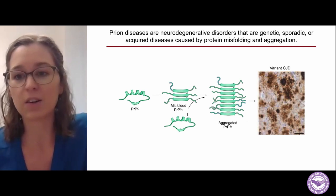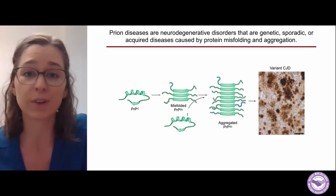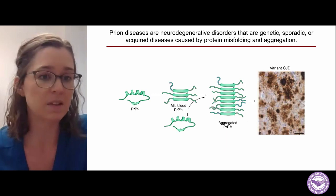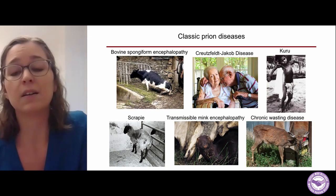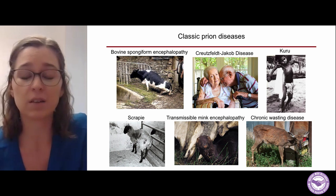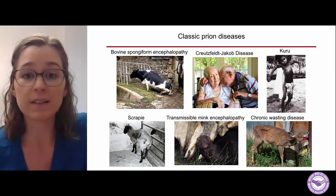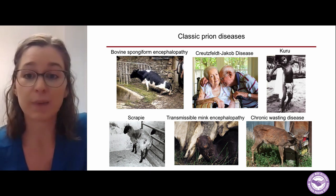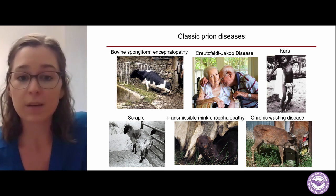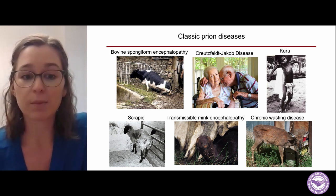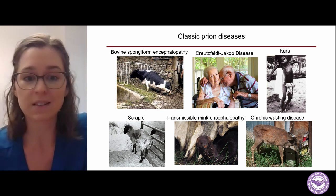This misfolded structure can then pile on top of each other to form a fibril or an aggregate that can deposit in the brain. What you're seeing here is a neuropathology image that's an example of variant Creutzfeldt-Jakob disease. There are many prion diseases, and some classical examples would be BSE, or what is commonly known as mad cow disease, Creutzfeldt-Jakob disease, Kuru, scrapie in sheep and goats, transmissible mink encephalopathy, and chronic wasting disease in deer and elk.